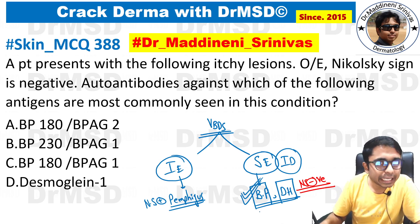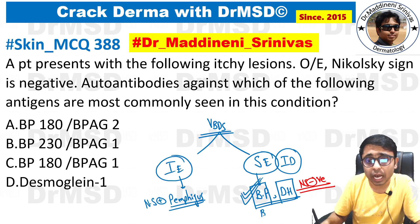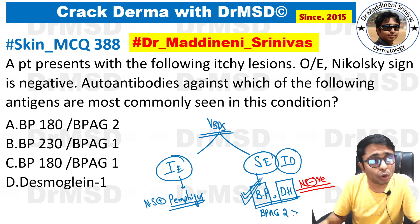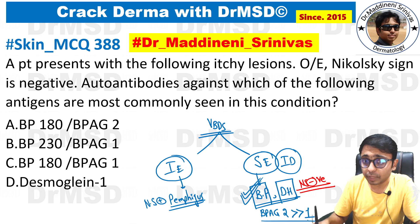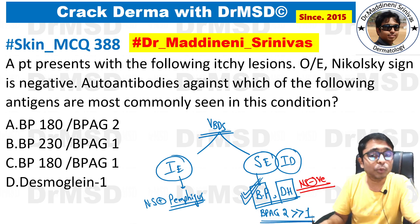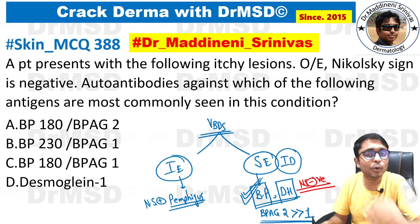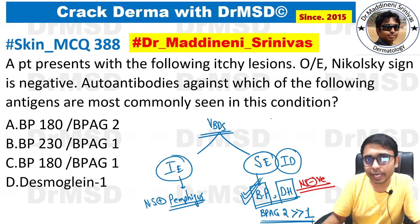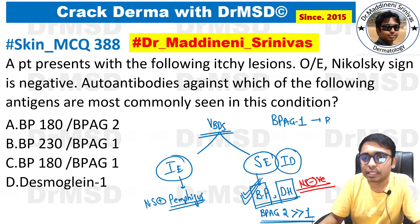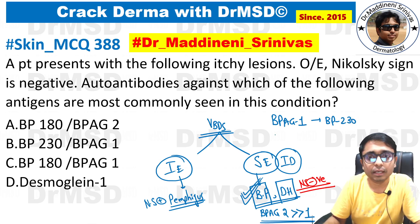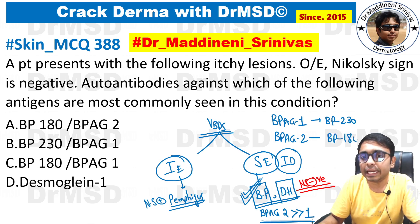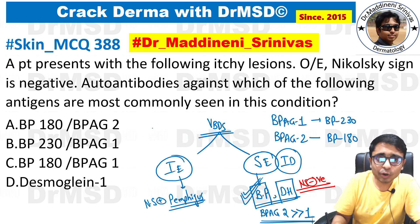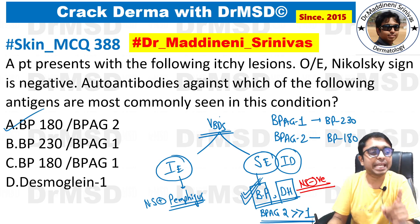In bullous pemphigoid, the antigens against which autoantibodies are produced are bullous pemphigoid antigen 2 more than bullous pemphigoid antigen 1. BPAG1 is also called BP230, because it is of 230 kilodaltons weight. Whereas BPAG2 is called BP180. With all these clues, I hope you have marked option A as the answer.